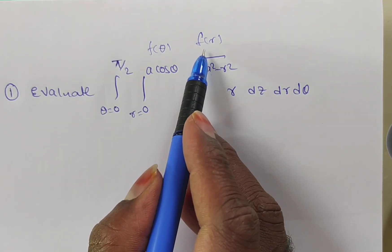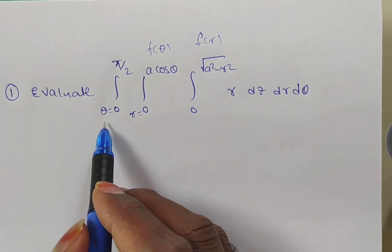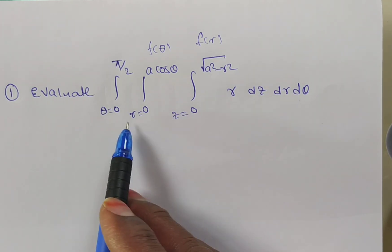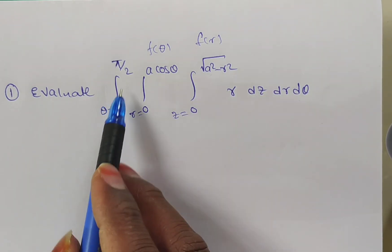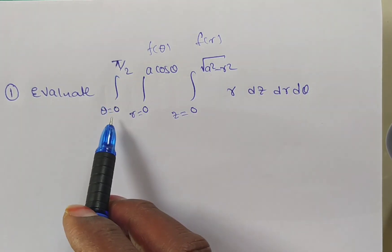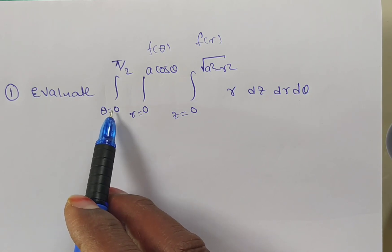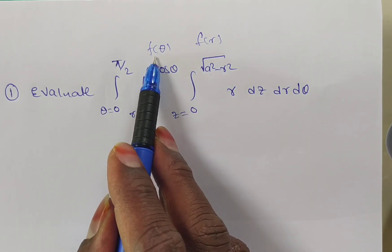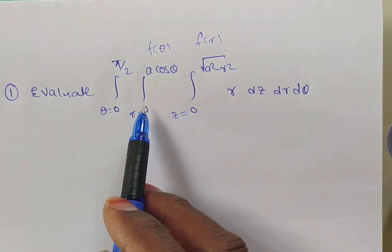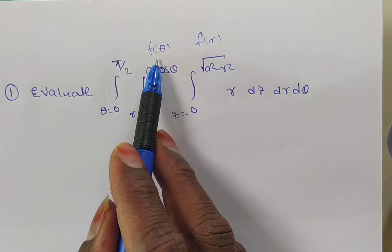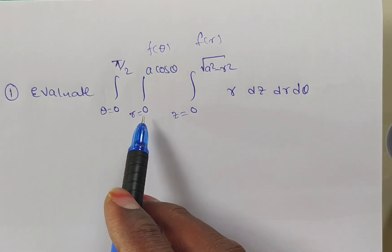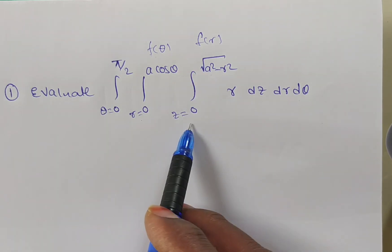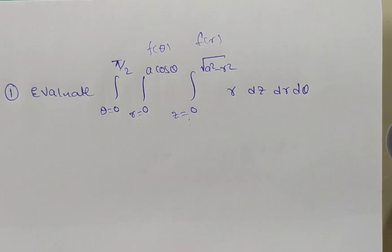Remaining after theta, we have r and z left. The next limit is a function of theta — specifically 0 to a cos theta — and since theta is already used, this is obviously the limit for r. The innermost limit, 0 to square root of a square minus r square, is a function of r, and since r is also already assigned, this is the limit for z.